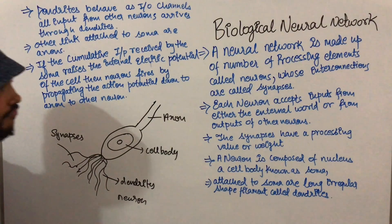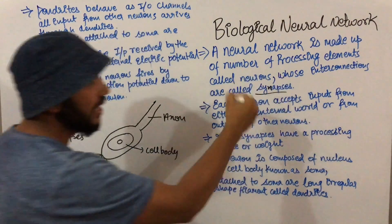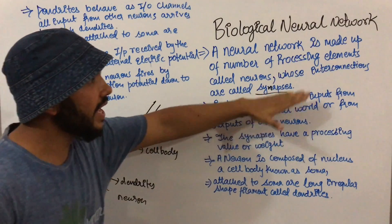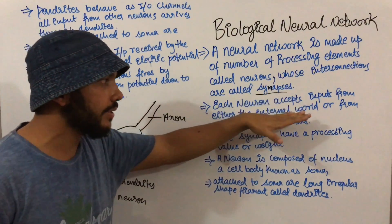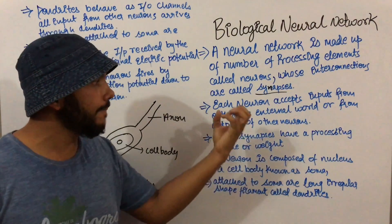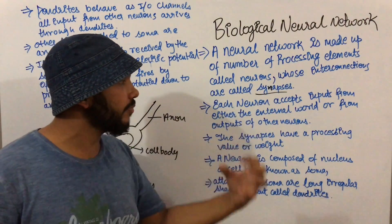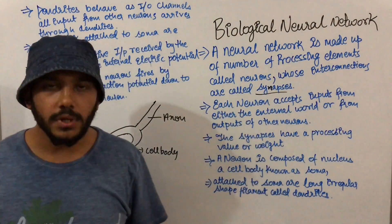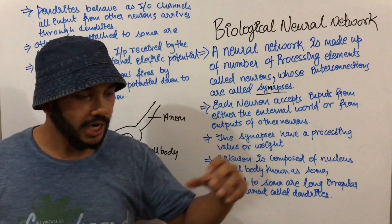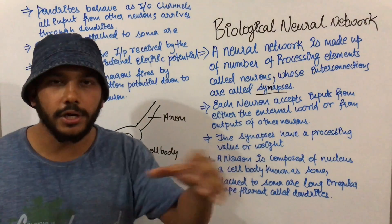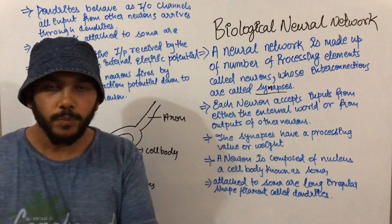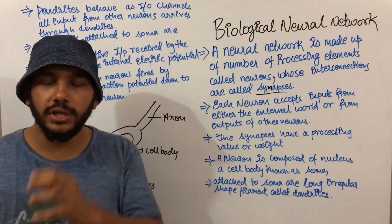These neurons are connected with each other through synapses, which are a type of chemical substance. Each neuron accepts input from either the external world or from the output of other neurons. For example, suppose you are writing with one hand continuously for two hours and now your hand is paining, and with the other hand you are drinking a hot cup of coffee. The neurons at the tip of the finger with which you are writing will pass the information that there is pain in the hand.